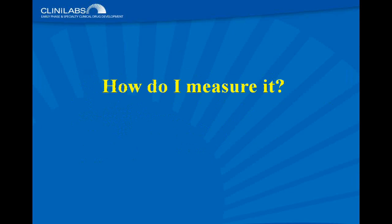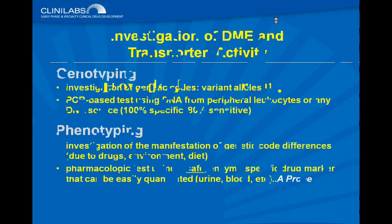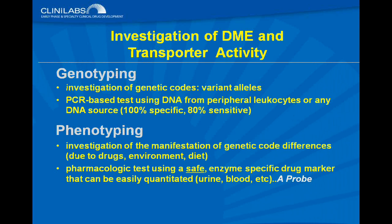Now, how do I measure pharmacogenetics? There are two ways to investigate the activity of drug metabolizing enzymes and transporters. One is genotyping, which investigates an individual's genetic code looking for variant alleles. Normally people don't look for wild-type alleles — they assume that if they find two variant alleles, no wild-type alleles are present. But you can genotype for wild-type alleles and say this person has one wild-type and one variant allele.